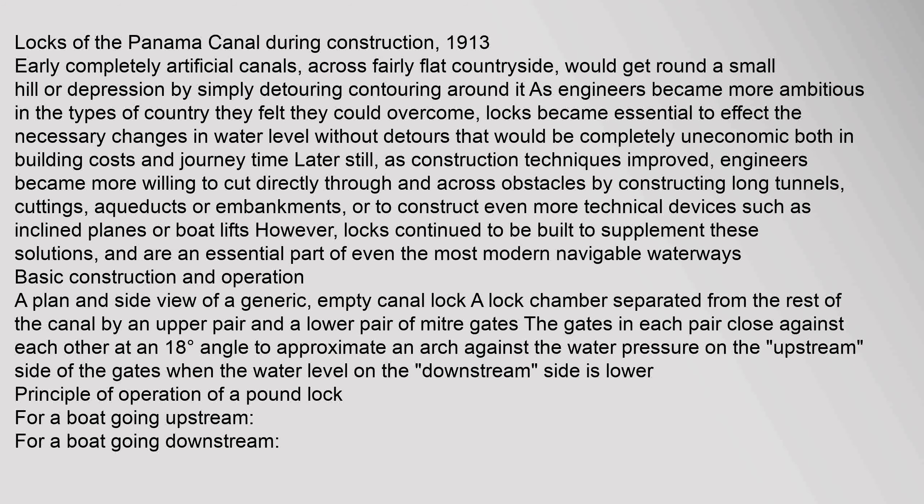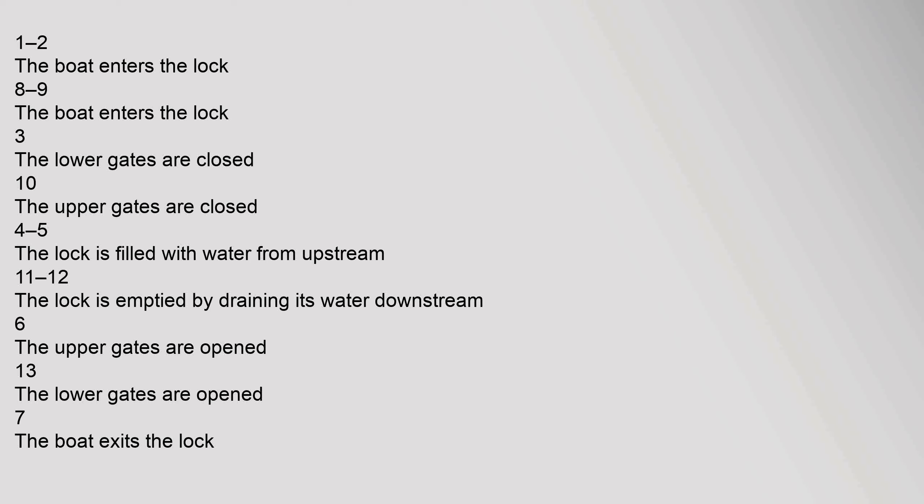A lock chamber is separated from the rest of the canal by an upper pair and a lower pair of mitre gates. The gates in each pair close against each other at an 18-degree angle to approximate an arch against the water pressure on the upstream side. For a boat going upstream: the boat enters the lock, the lower gates are closed, the lock is filled with water from upstream, the upper gates are opened, and the boat exits. For a boat going downstream: the boat enters the lock, the upper gates are closed, the lock is emptied by draining water downstream, the lower gates are opened, and the boat exits.